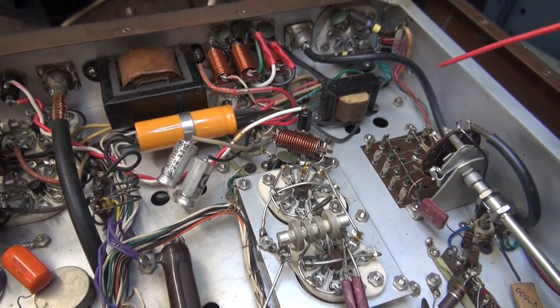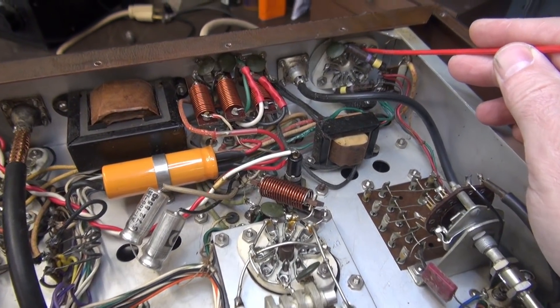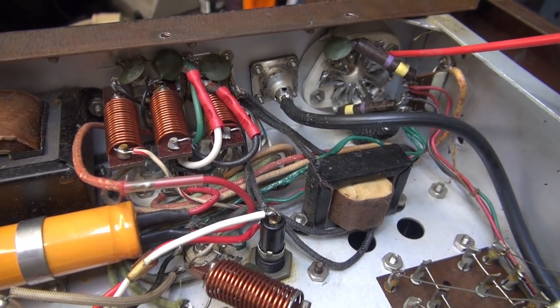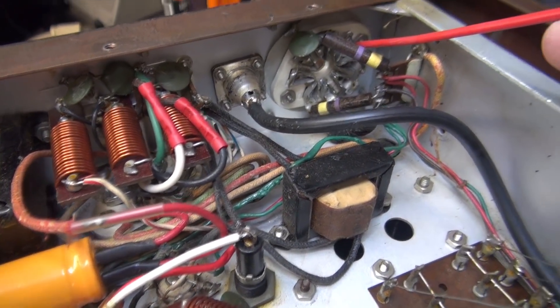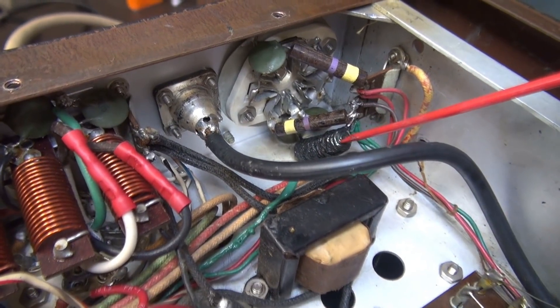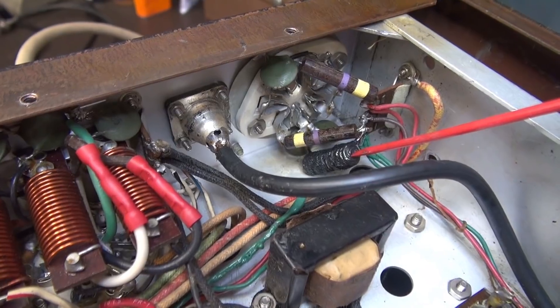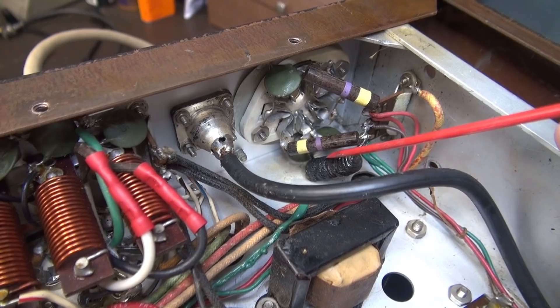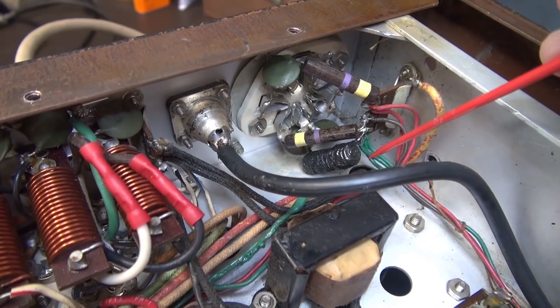Here we are bottom side of the Viking 2. There is the backside of the 8-pin octal socket that I was telling you the VFO normally plugs into. If you take a look right down there you're gonna see a coil and it's all melted, kind of looks like a big old caterpillar.